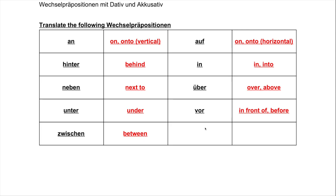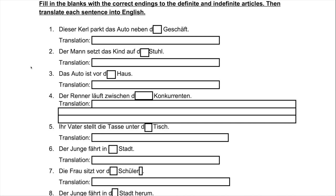There are a couple of songs to help memorize the Wechselpräpositionen. The first one goes: an, auf, hinter, in, und neben, über, unter, vor, und zwischen. Wo ist das Fragerwort mit Dativ? Wohin ist Accusativ? — sung to the tune of the Battle Hymn of the Republic. This reminds you that 'wo' is used with the dative case — that's 'where' — and 'wohin' is used with the accusative, which means 'to where.'